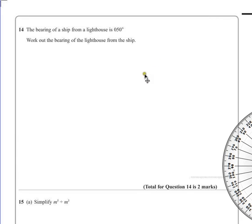Okay, so this is question 14. The bearing of a ship from a lighthouse is 050 degrees. Work out the bearing of the lighthouse from the ship.